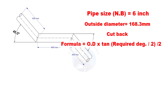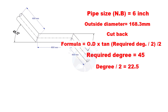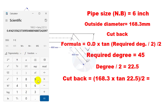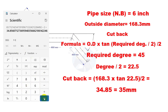Cutback is OD multiplied by tan of half degree, divided by 2. Here, the required degree is 45. Half of 45 is 22.5. The cutback is nearly 35 millimeters.